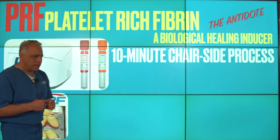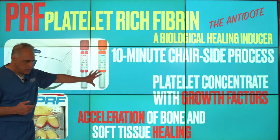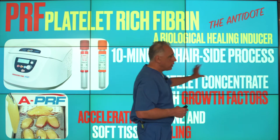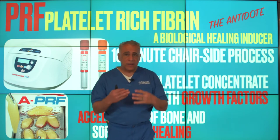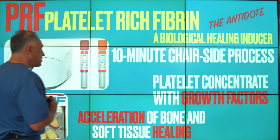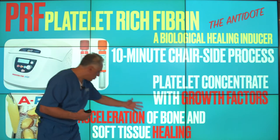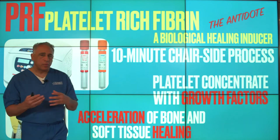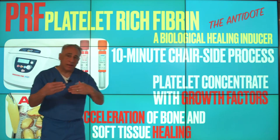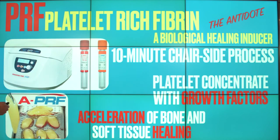PRF is typically a simple chairside procedure of about 10 minutes, where we draw several test tubes of blood from the patient and centrifuge it to get a platelet concentrate with a high degree of growth factors. We then use that concentrate mixed with the bone graft, which provides acceleration of bone and soft tissue healing — in particular, it has a great advantage in the maturation of the gum tissue, which is critical for the enhanced healing of the area.